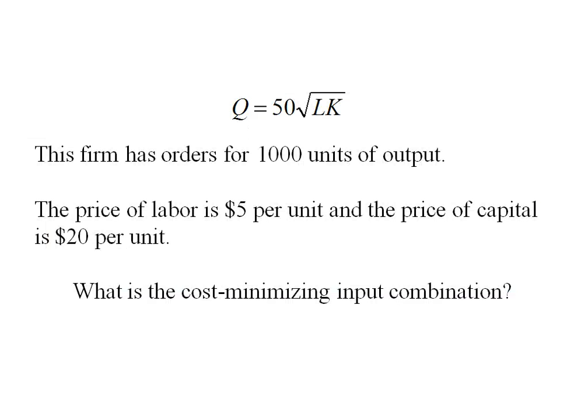Here we have a production function: Q equals 50 times the square root of L times K, and suppose this firm has orders for 1000 units of output. The price of labor is $5 and the price of capital is $20. Our job is to find the cost-minimizing input combination.